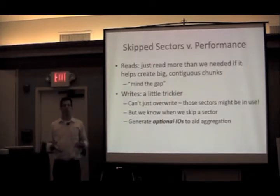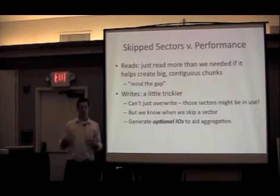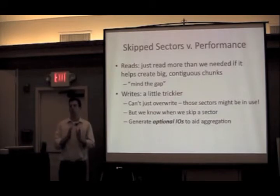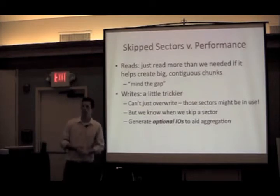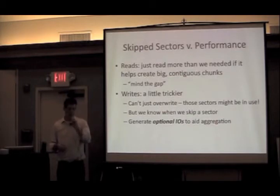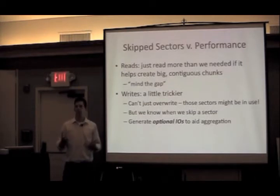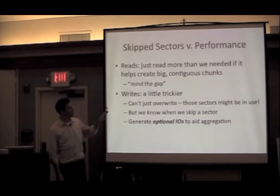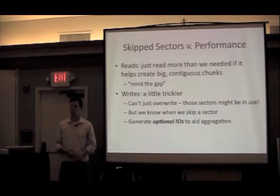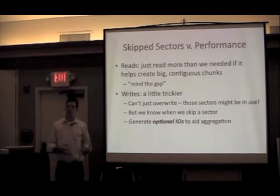For reads, the answer is quite simple — this is an observation Jeff Bonwick had around 2008, which he called the 'mind the gap' fix. He changed the IO aggregation code so that if it noticed a small gap between reads you wanted to perform, it would just read the whole thing — create a read large enough to span them both. That got a nice performance win. Writes are trickier: we can't just decide to write a bit more data, because that data might contain useful information we'd be overwriting.